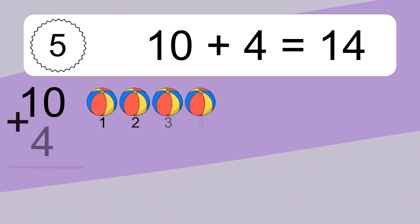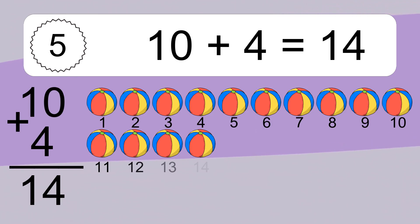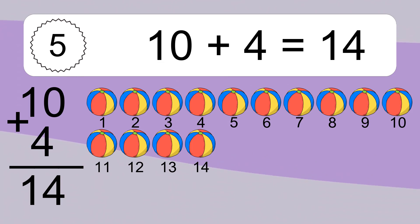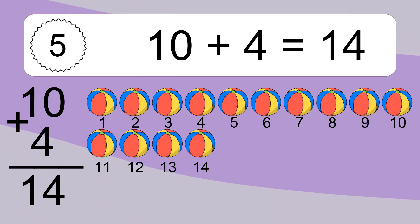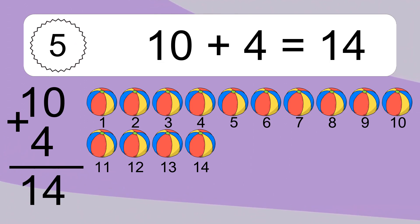10 plus 4 equals what? 10 plus 4 equals 14. Let's count it. 1, 2, 3, 4, 5, 6, 7, 8, 9, 10, 11, 12, 13, 14.